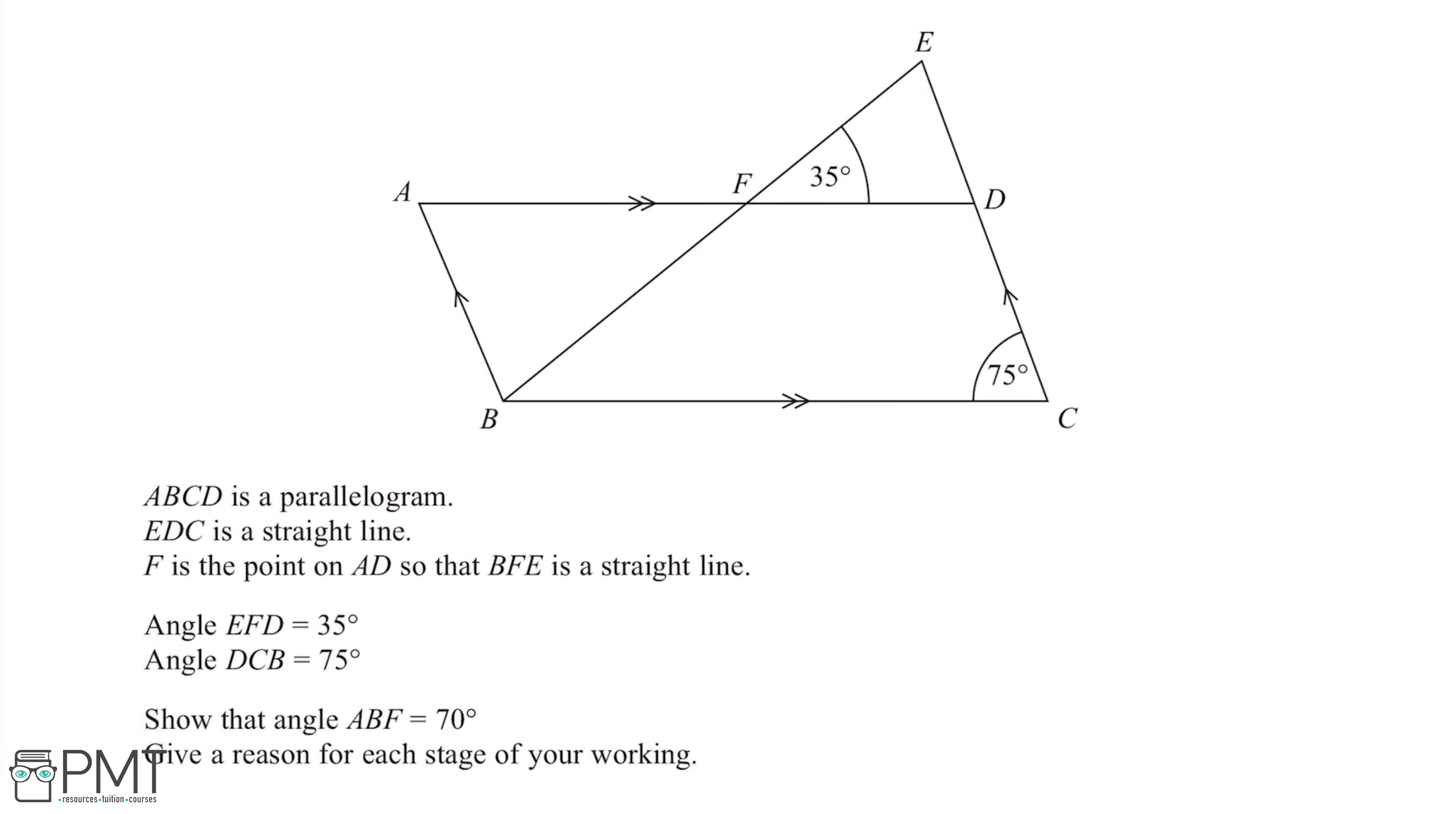ABCD is a parallelogram. EDC is a straight line. F is the point on AD so that BFE is a straight line. Angle EFD is 35 degrees. Angle DCB is 75 degrees. Show that angle ABF is 70 degrees. Give a reason for each stage of your working.